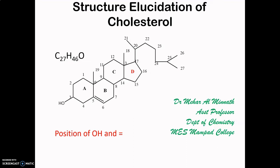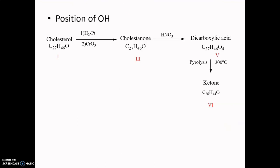We also established that the OH present on cholesterol is a secondary OH group. To determine its position, the following reactions were carried out: cholesterol was hydrogenated then oxidized to get cholestinone. This cholestinone on treatment with HNO3 — rigorous oxidation — gave a dicarboxylic acid, and this dicarboxylic acid on pyrolysis gave a ketone.